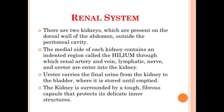There are basically two kidneys which are present on the dorsal wall of the abdomen, outside the peritoneal cavity. The peritoneal cavity is the potential space between the parietal peritoneum that surrounds the abdominal wall and the visceral peritoneum that surrounds the internal organs. So our kidneys are present outside the peritoneal cavity.